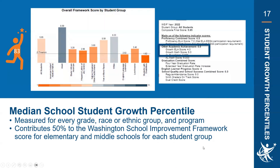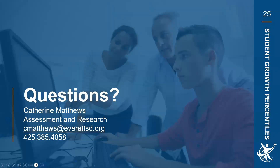For example, in the Washington School Improvement Framework, a school received a four for growth in ELA and a six for growth in math, placing them at the fourth and sixth decile respectively. We hope this webinar has been helpful in understanding individual and median school student growth percentiles. If you have any questions about student growth percentiles or other assessment or data questions, please contact Catherine Matthews, Director of Assessment and Research, at 425-385-4058 or cmatthews@EverettSD.org.